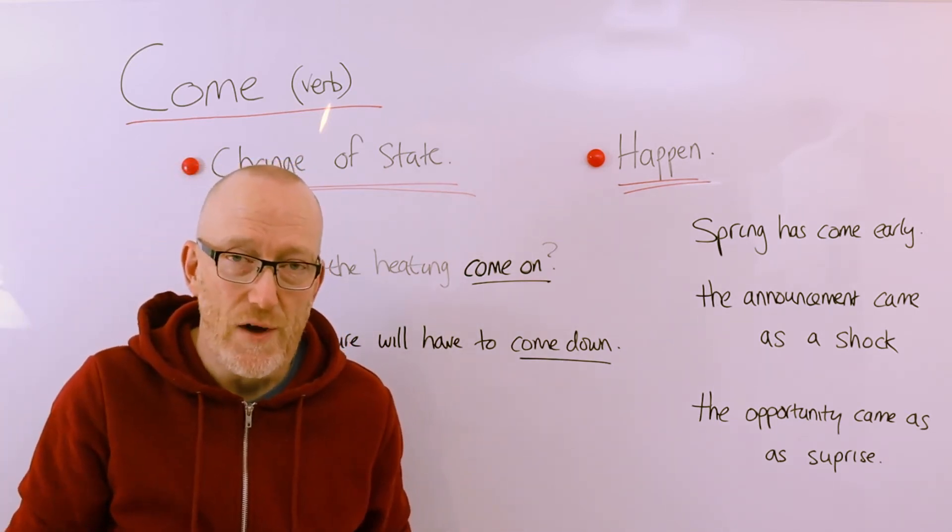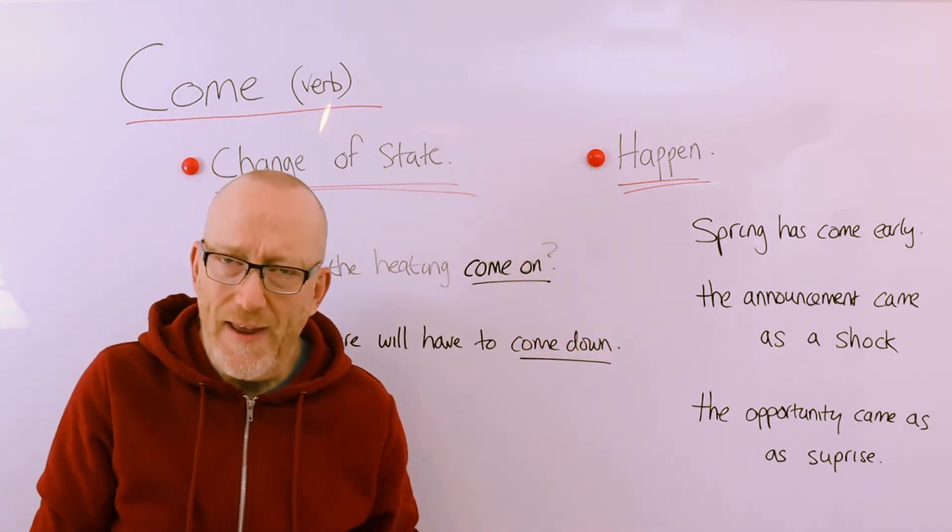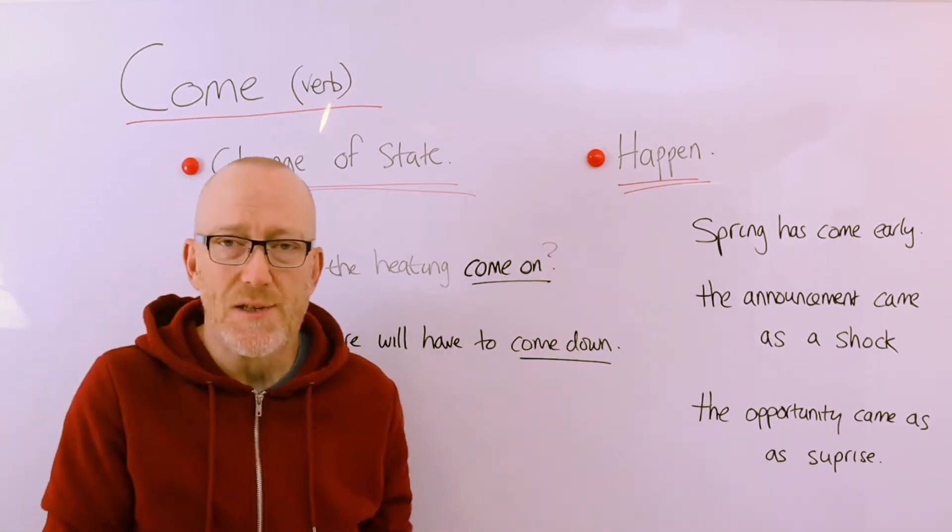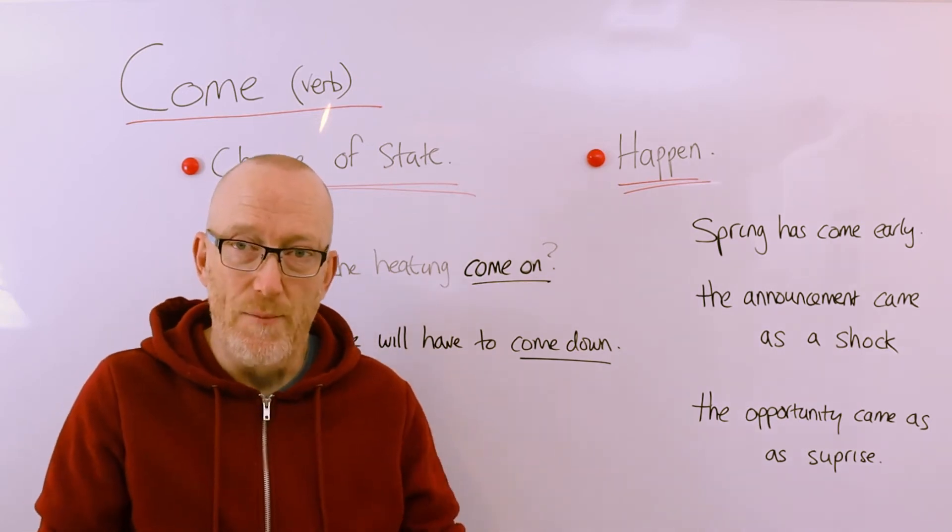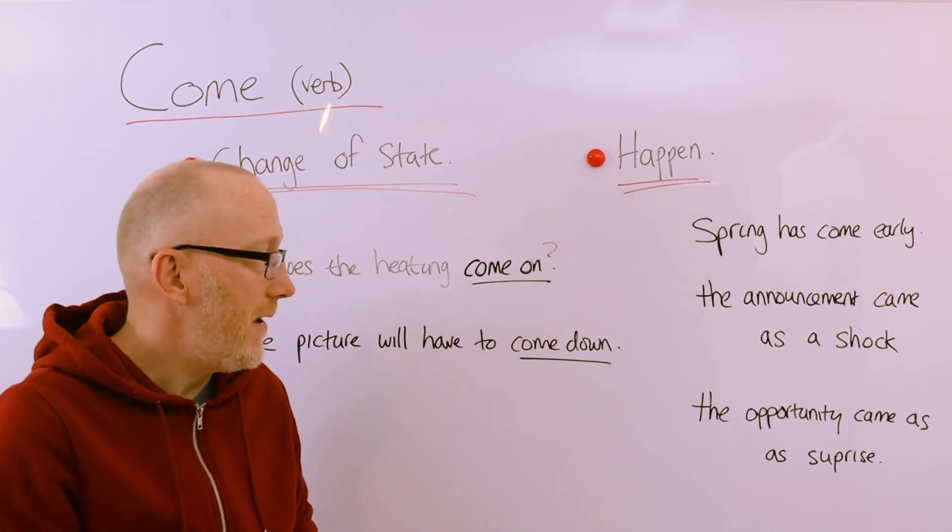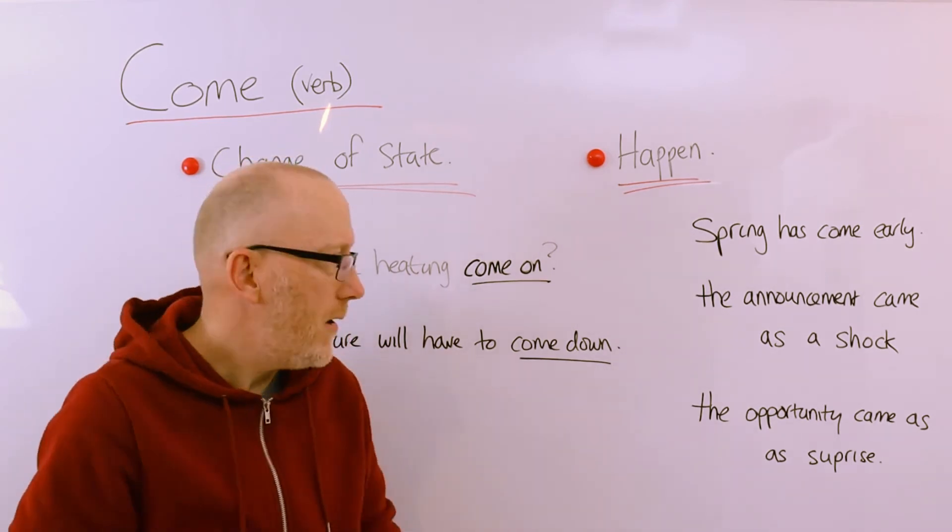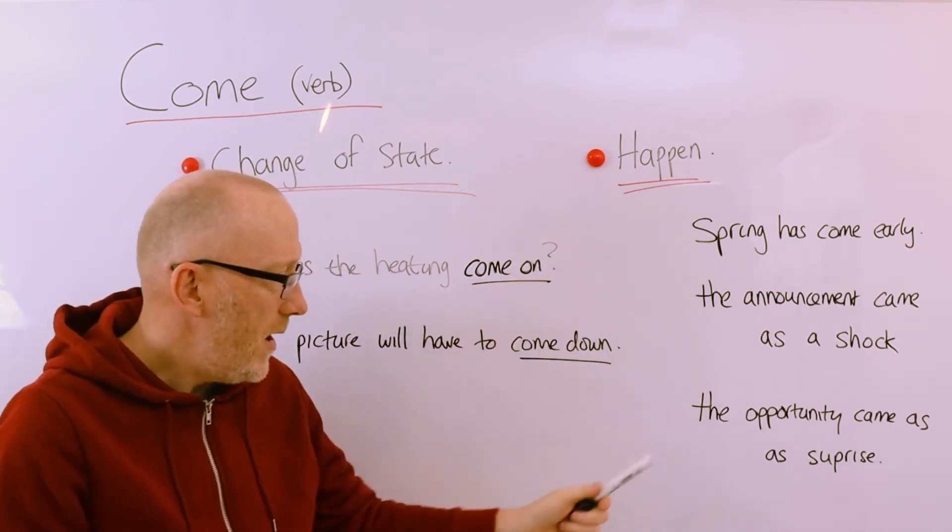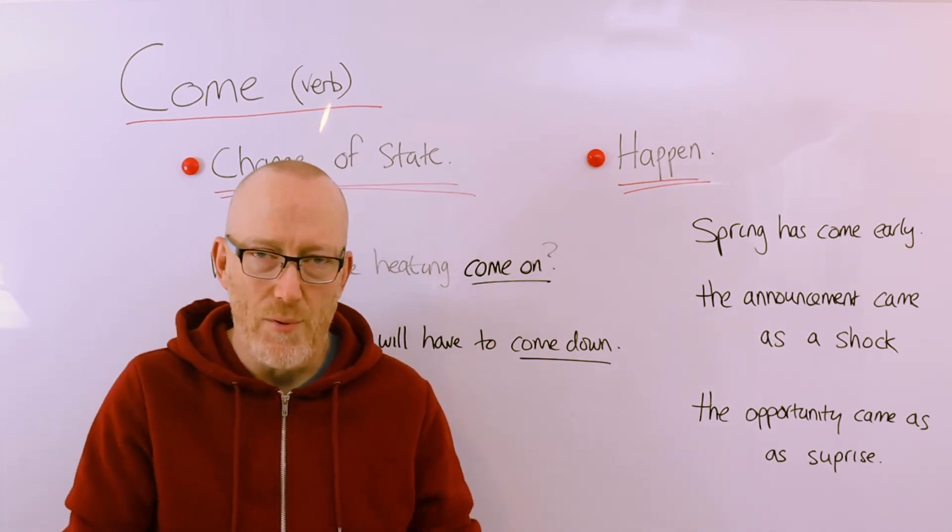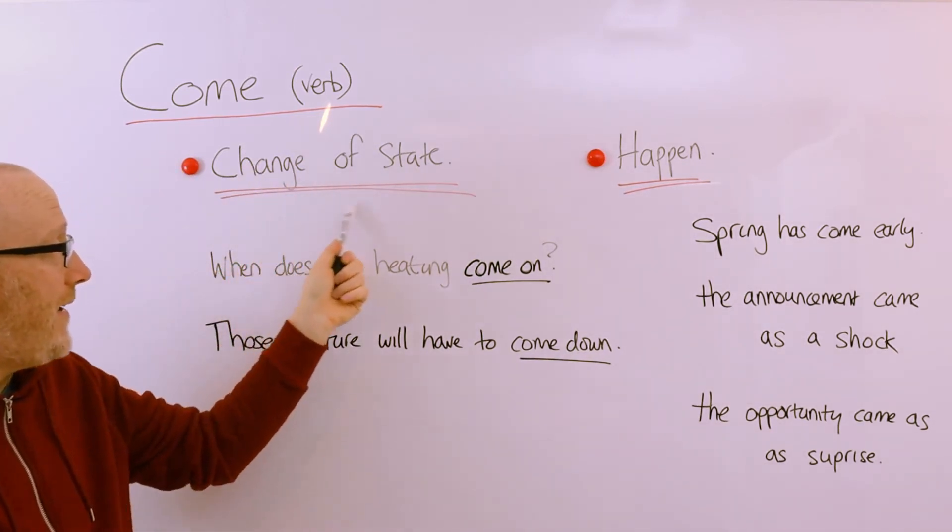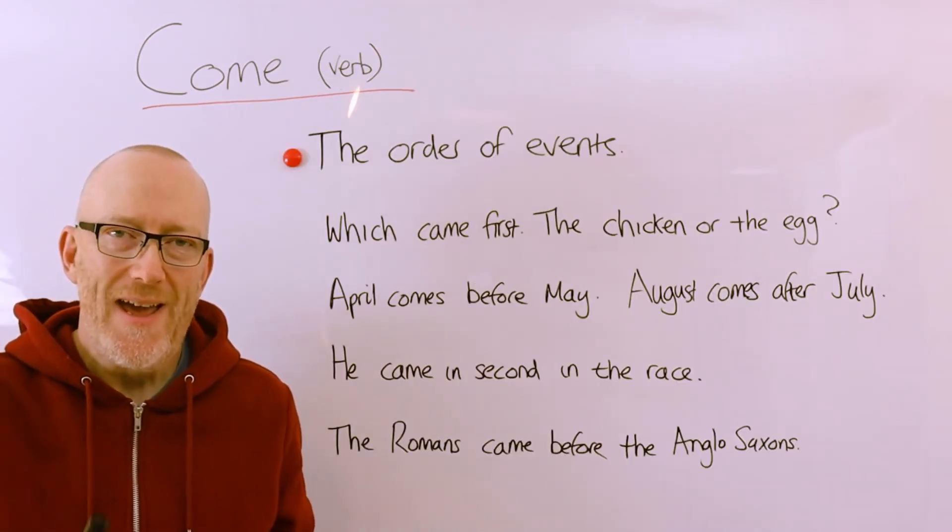Okay, so change of state. When we're describing things that just happen, things that just occur in life, for example, spring has come early. Spring has come early. We all know spring, one of the four seasons, will arrive, and this year it has come early, earlier than expected I suppose is what that's saying. The announcement came as a shock. The announcement of her death came as a shock to me. So when it happened, it was a shock to me, it came as a shock. Or an alternative, the opportunity came as a surprise. I was really surprised by this opportunity, the opportunity came as a surprise. So we're using the verb to talk about things that change, changing from one state of being to another, and also just to describe things that happen.